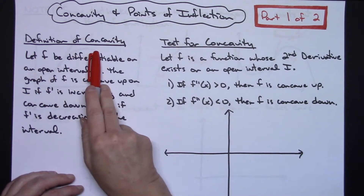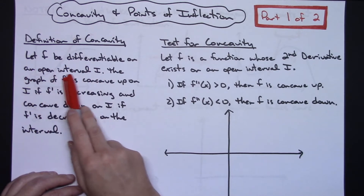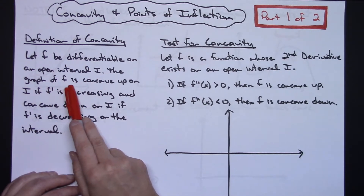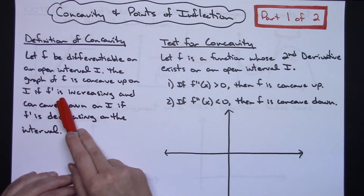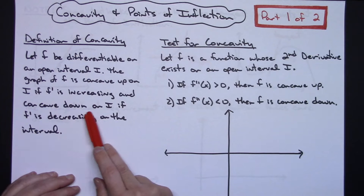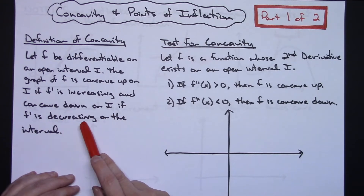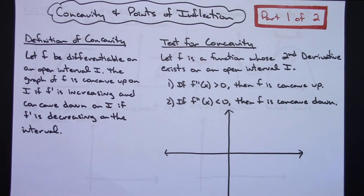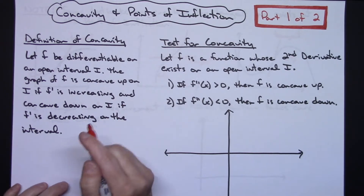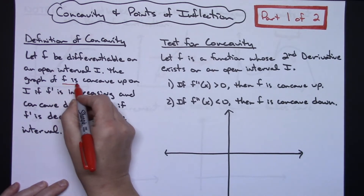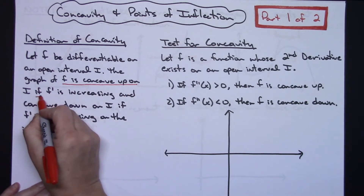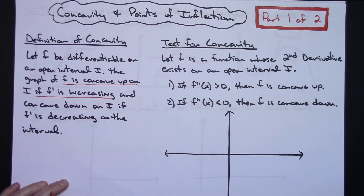We're going to start with the definition of concavity. We let f be differentiable on an open interval. The graph of f is concave up on the interval if f prime is increasing, and concave down on the interval if f prime is decreasing. The key thing to memorize: f is concave up if f prime is increasing.